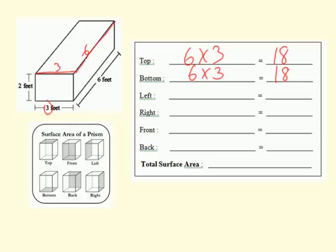If we look at the left, we would multiply the length and the height, and that would be 3 times 2. So the left side is 6 square feet. The right side is going to be exactly the same, so it's also 6 square feet.